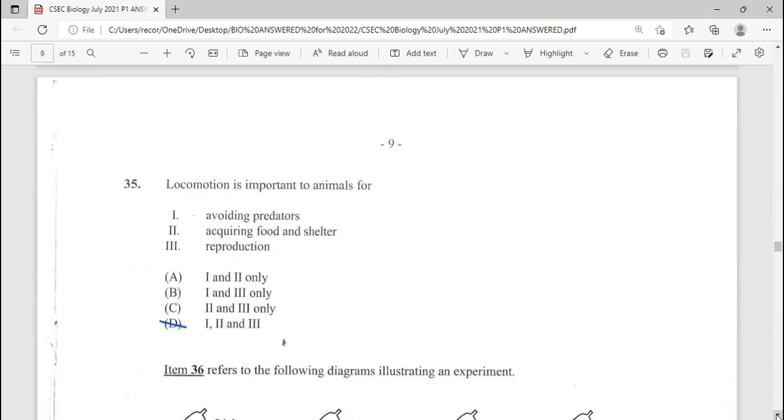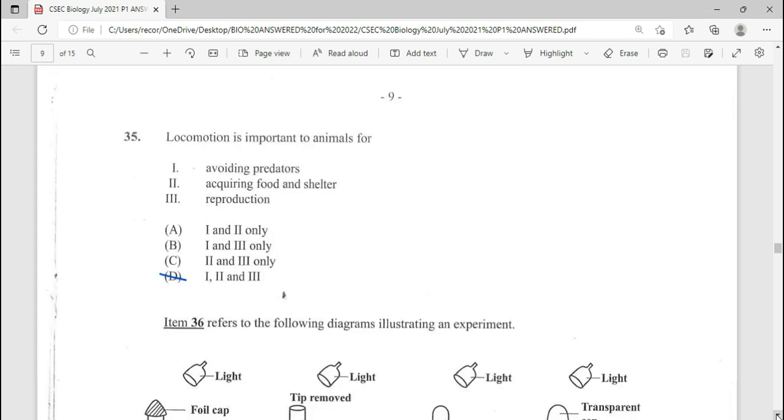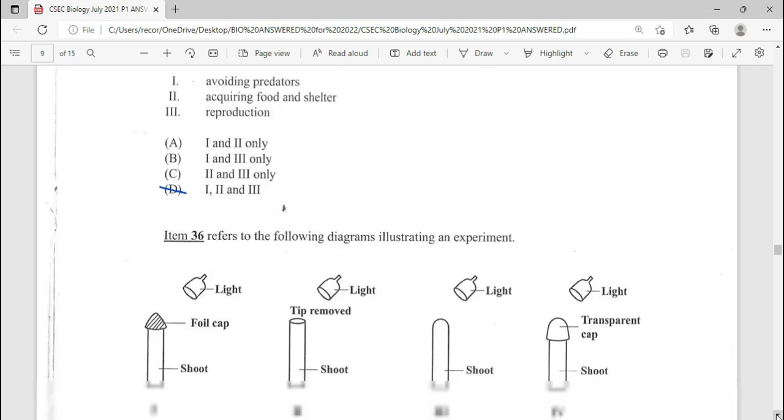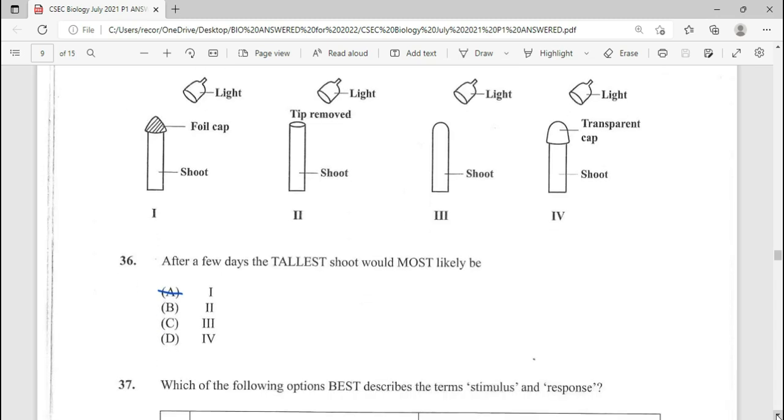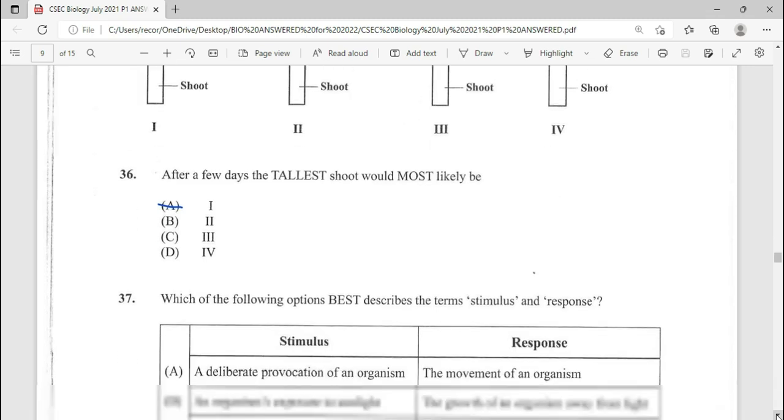35, locomotion is important to animals for, this is a repeated question. Our answer here being D. 36 is a popular repeated question, and it reads, after a few days, the tallest shoot would most likely be A.